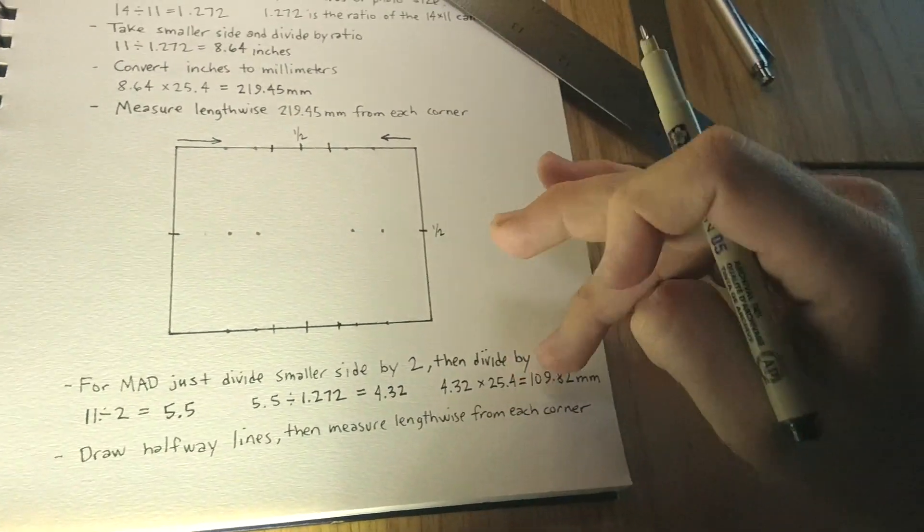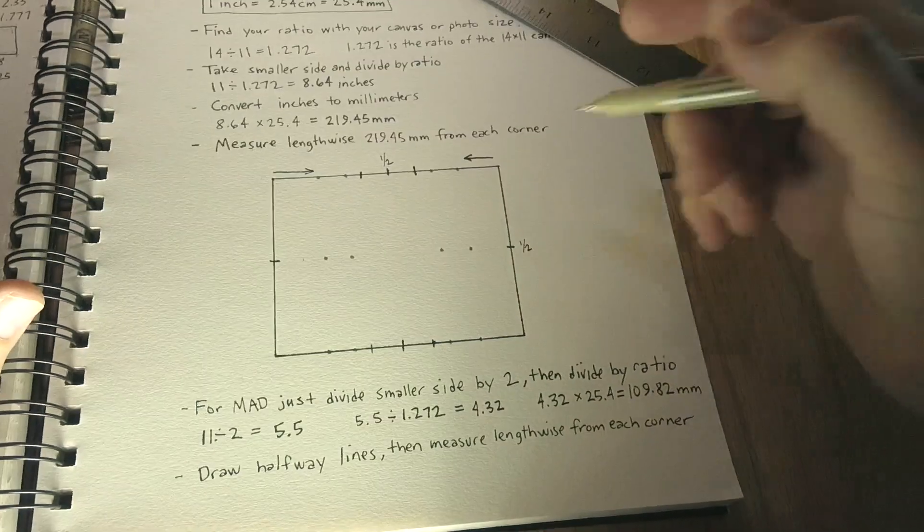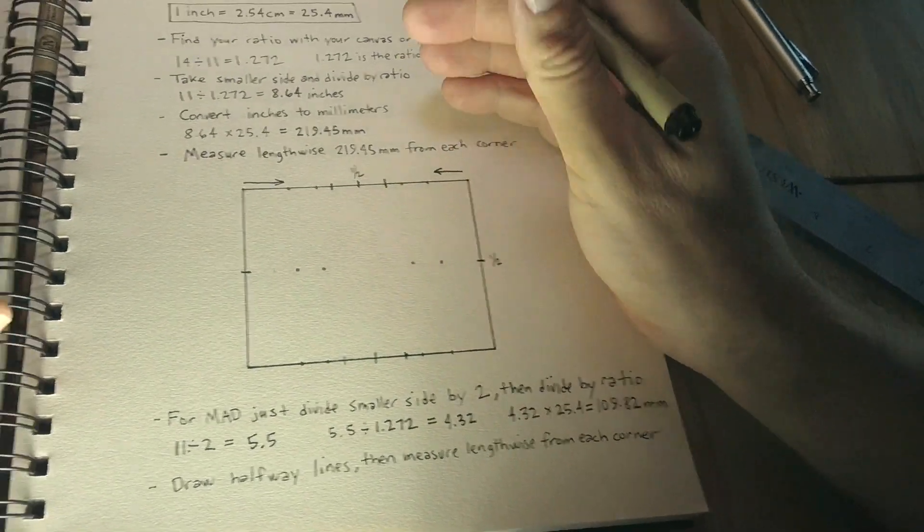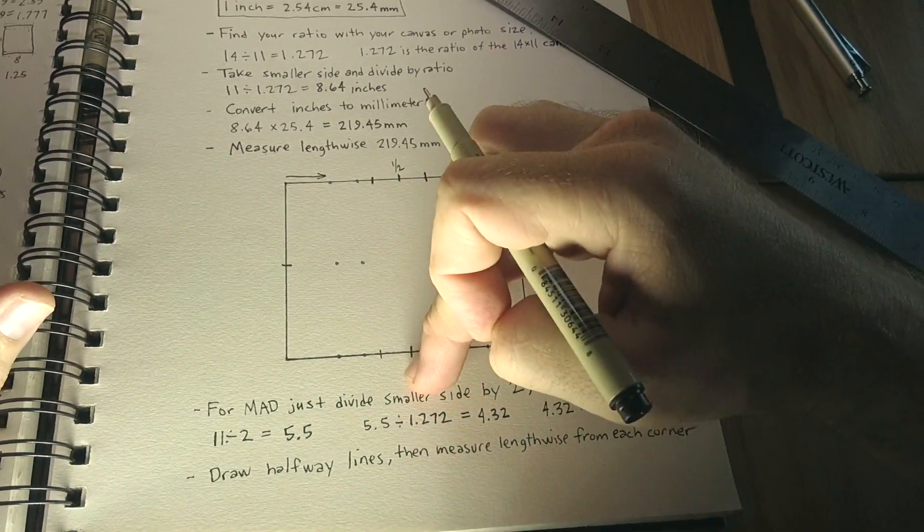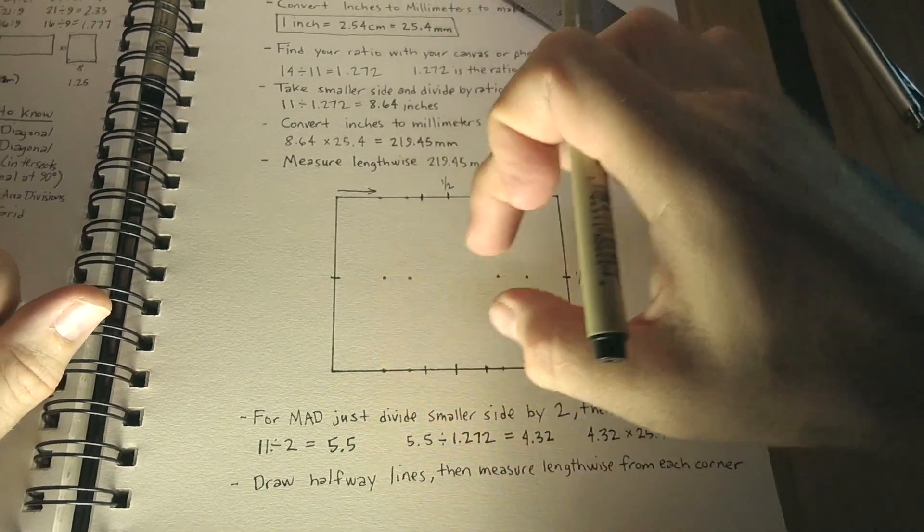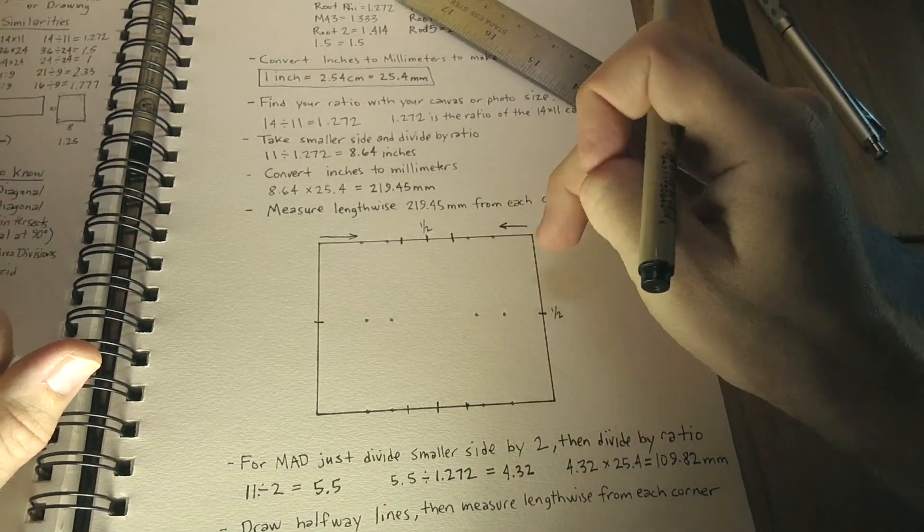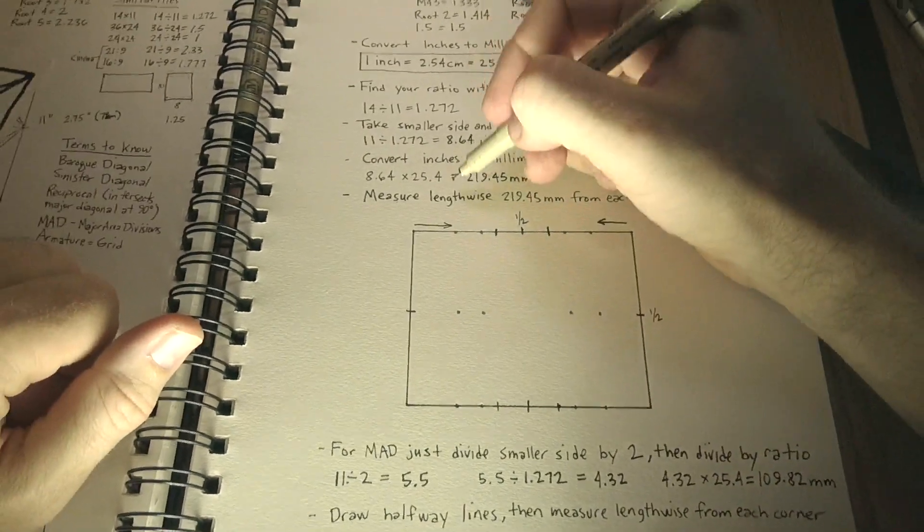Okay, so once we find our new measurement, the 109.82 millimeters, we just take our canvas or our photo or whatever, divide it in half vertically and horizontally. That'll give us one, two, three, four smaller rectangles inside the mother. So then we just do the same as last time.